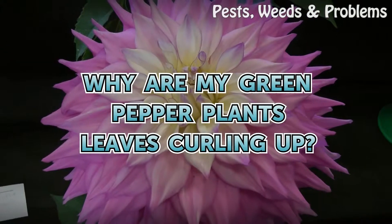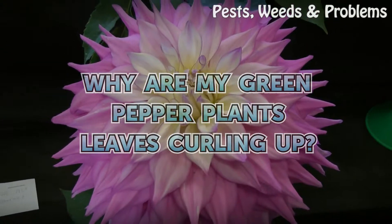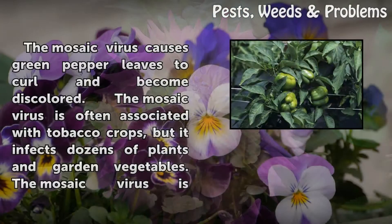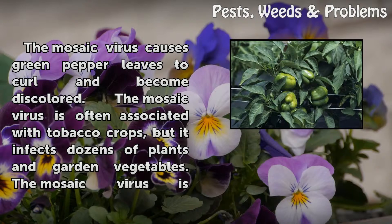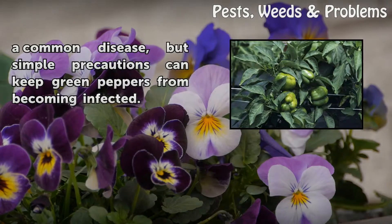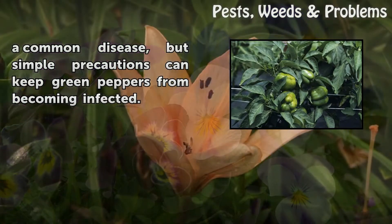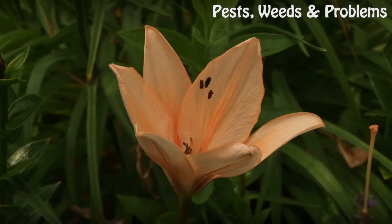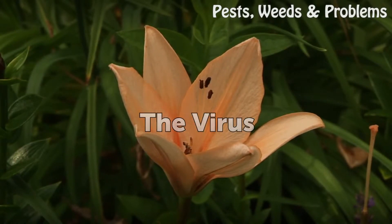Why are my green pepper plants' leaves curling up? The mosaic virus causes green pepper leaves to curl and become discolored. The mosaic virus is often associated with tobacco crops, but it infects dozens of plants and garden vegetables. It is a common disease, but simple precautions can keep green peppers from becoming infected.